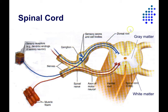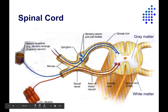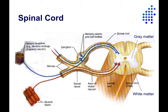Inside the spinal cord is a long column of gray matter, and there's a central canal — a long tube filled with cerebrospinal fluid. This gray matter is made up of somas and dendrites, and this is where some information processing occurs. This is where many spinal reflexes are housed — the circuitry for those reflexes — and also central pattern generators, which we'll talk about a little later in the semester.